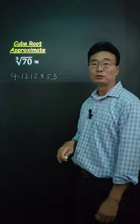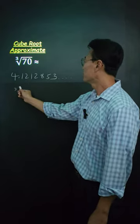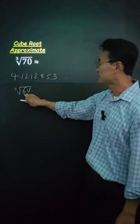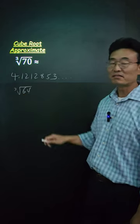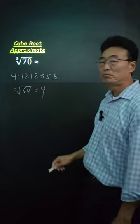To approximate cube root of 70, here's what you do. First, take the cube root of 64, because that's the biggest perfect cube less than 70, which is 4.